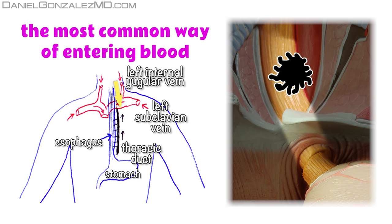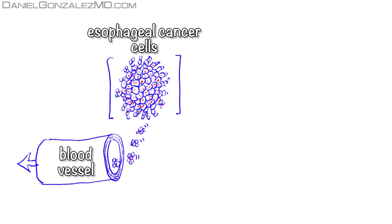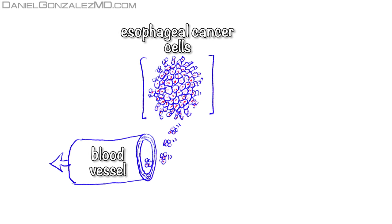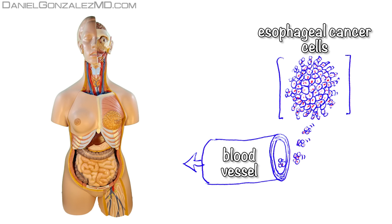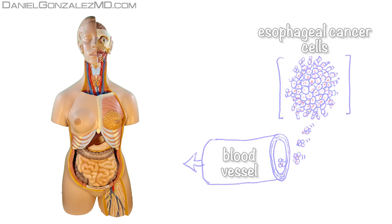This duct empties its contents directly into the superior vena cava. The less frequent way is when inside the esophageal cancer itself, cells enter a blood vessel, breaking its wall. Once in the blood, these cells of esophageal cancer can travel to live anywhere in the body.